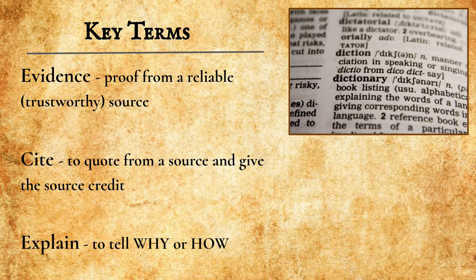We need to introduce you to some key terms. Please be sure to record these vocabulary terms in your reader-writer notebook using the Cornell Notes strategy. If you aren't sure how to make your Cornell Notes, please revisit the Cornell Notes video on Google Classroom. Key terms — Evidence: proof from a reliable, trustworthy source. Cite: to quote from a source and give the source credit. Explain: to tell why or how. Now would be an excellent time to pause the video and record all of these terms using the Cornell Notes strategy.